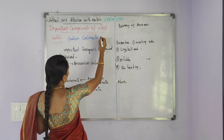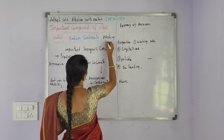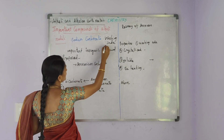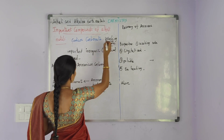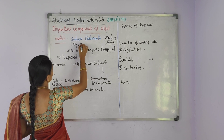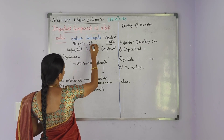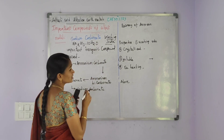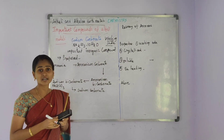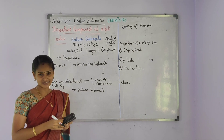Sodium carbonate is also called washing soda. The molecular formula of sodium carbonate is Na2CO3·10H2O. It is one of the important inorganic compounds which is used in industries.